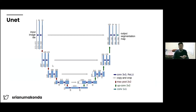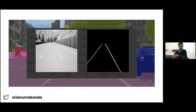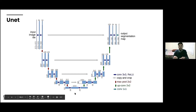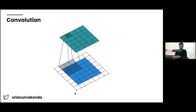Whenever we use a CNN, our output is a label — so if I gave it an image of a cat, I would get a label as output. But in this case we want the output to be another image. So what we do is the opposite of a convolution, known as upsampling. Instead of ending the convolution after performing it, we do the opposite and generate a new image.